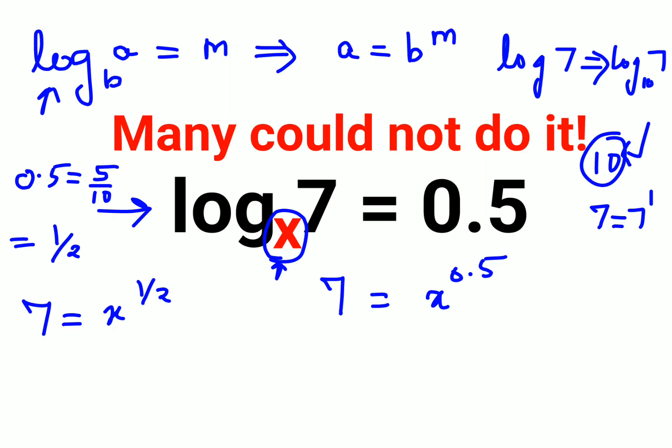Now in order to find the value of x we can take squares on both sides. So we have 49 is equals to x raised to half raised to 2 that is nothing but just 1. Therefore value of x comes out to be 49.